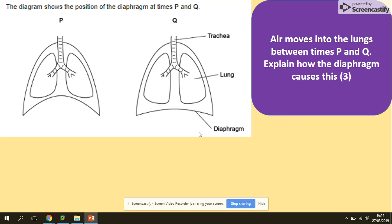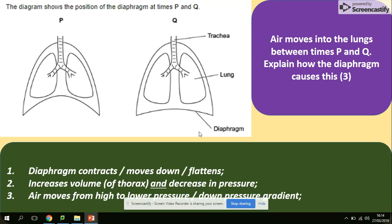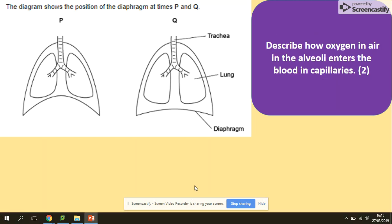Another question using the same diagram: explain how the diaphragm causes air to move into the lungs — this is worth three marks. Use your knowledge of pressure and volume. The diaphragm contracts and moves down; this increases the volume and decreases the pressure. Remember: when volume increases, pressure decreases. So air moves from higher to lower pressure — down the pressure gradient.